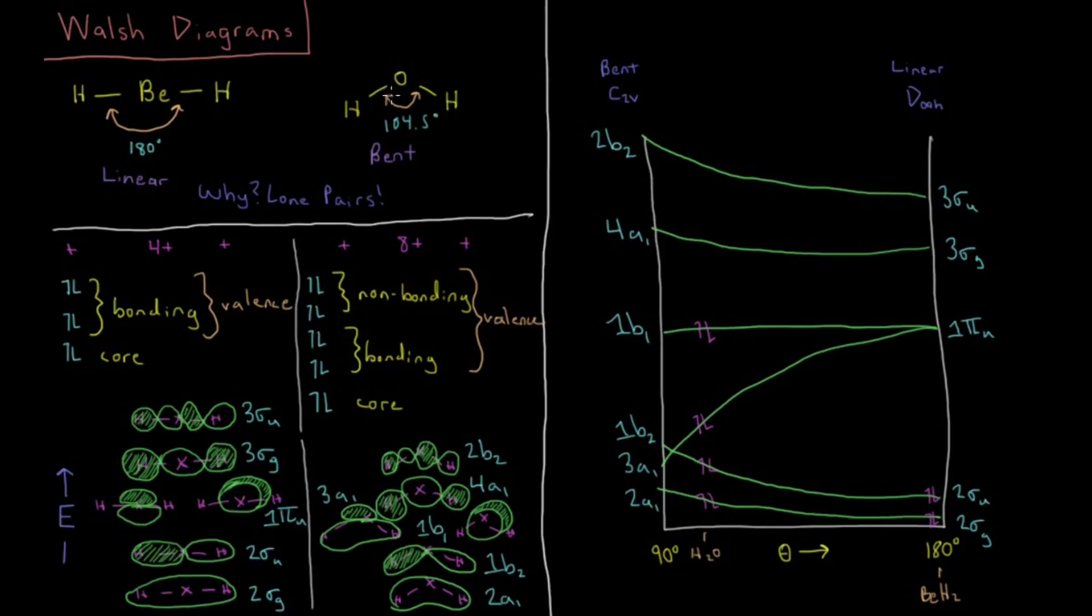Water as we saw in the previous video is at 104.5 degrees, that's what's called a bent shape in VSEPR theory. So the answer to why these are different is the fact that water has lone pairs and beryllium hydride does not.